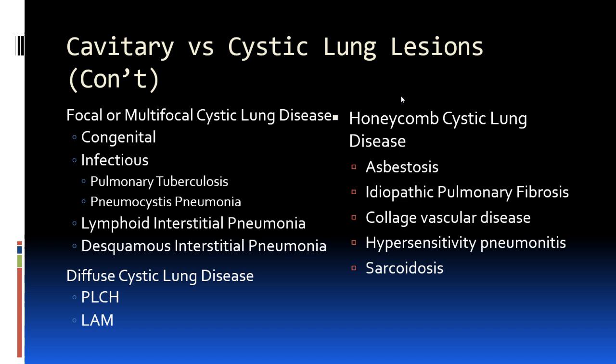For cystic lung disease, one useful classification is by distribution. Focal or multifocal cystic lung disease includes congenital bronchial malformations and infections such as TB, PCP, or lymphoid interstitial pneumonia. Diffuse cystic lung disease includes pulmonary Langerhans cell histiocytosis and lymphangioleiomyomatosis. Honeycombing cystic lung disease includes asbestosis, IPF, collagen vascular disease, hypersensitivity pneumonitis, and sarcoidosis.